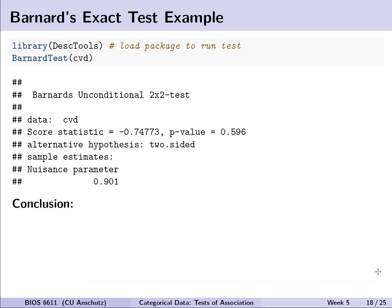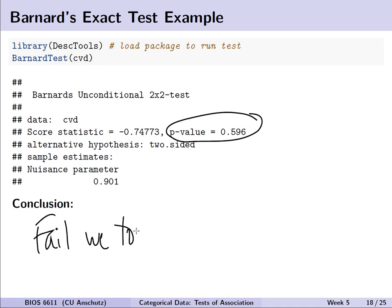Likewise, we can run the same test using Barnard's exact test. It's not a default function in R, so we load a special library — here we use the library Desk Tools to run the Barnard test. Running it on our 2x2 matrix gives a similar result: the p-value is greater than 0.05, so we again fail to reject H0. There is no statistically significant difference between the two groups, and we cannot declare a lack of independence or association.